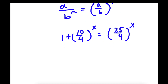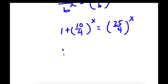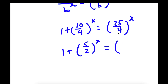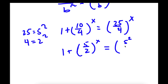Now 10 over 4 can be simplified to 5 over 2, and 25 over 4 can be simplified — 25 is 5 squared and 4 is 2 squared. So I have 5 squared over 2 squared to the power of x.